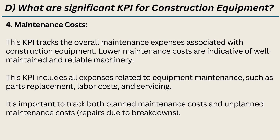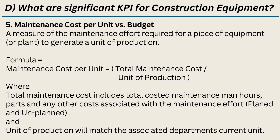4. Maintenance costs — This KPI tracks the overall maintenance expenses associated with construction equipment. Lower maintenance costs are indicative of well-maintained and reliable machinery. This KPI includes all expenses related to equipment maintenance, such as parts replacement, labor costs, and servicing. It is important to track both planned maintenance costs and unplanned maintenance costs (repairs due to breakdowns). 5. Maintenance cost per unit vs. budget — A measure of the maintenance effort required for a piece of equipment or plant to generate a unit of production. Formula: Maintenance Cost per Unit = Total Maintenance Cost / Unit of Production. Total maintenance cost includes total costed maintenance man-hours, parts, and any other costs associated with the maintenance effort (planned and unplanned). Unit of production will match the associated department's current unit.